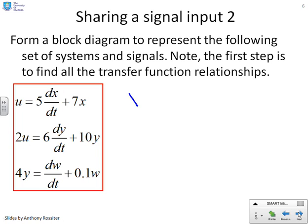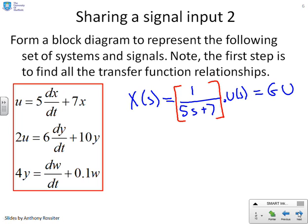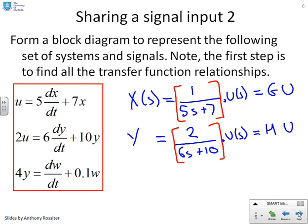So I'm going to write down X(s) equals 1 over 5s plus 7 into U(s), and I'm going to call this GU. So the transfer function for this top block, I'm going to call G. For this next block down here, I've got Y equals 2 over 6s plus 10 into U(s), and I'm going to call this H times U. And so therefore, this bit in here, this transfer function, H.